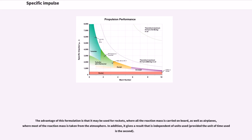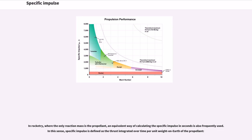The advantage of this formulation is that it may be used for rockets, where all the reaction mass is carried on board, as well as airplanes, where most of the reaction mass is taken from the atmosphere, and it gives a result independent of the units used. In rocketry, where the only reaction mass is the propellant, specific impulse is also frequently defined as the thrust integrated over time per unit weight on Earth of the propellant.